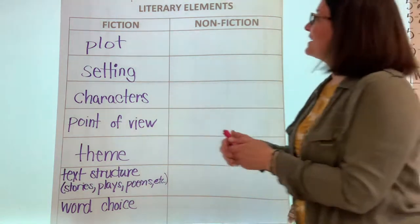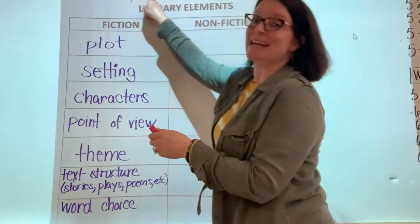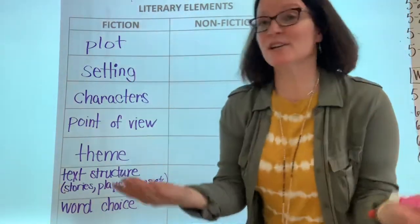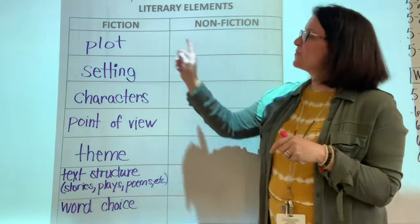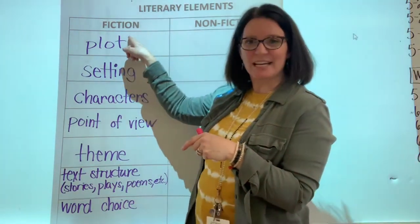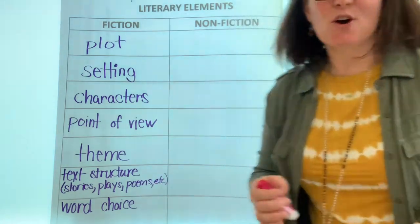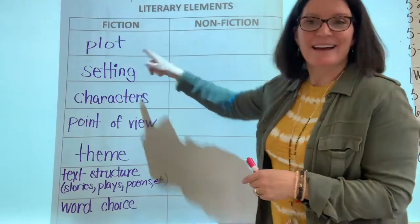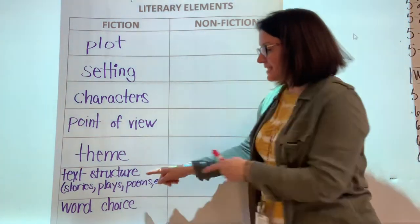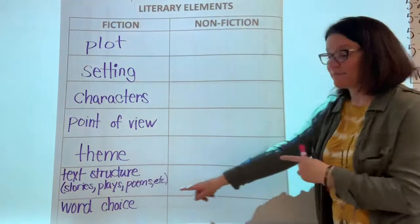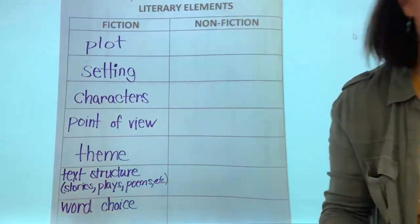Yesterday, we looked at literary elements. Literary is anything pertaining to literature — those are texts that we read — and we focused on fiction literature elements yesterday. Those included the plot, the setting, the characters, the point of view, the theme, the text structure, stories, plays, poems, etc., and word choice.